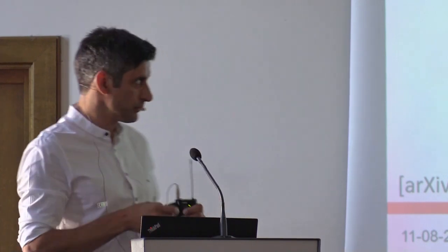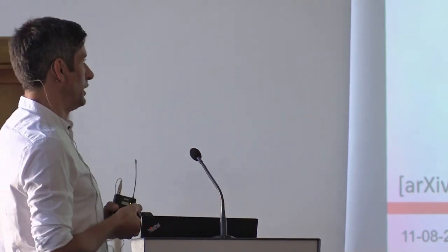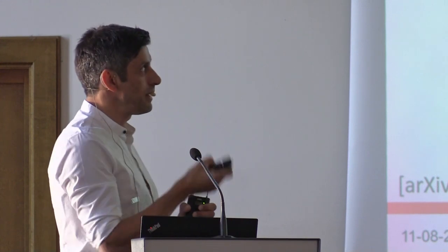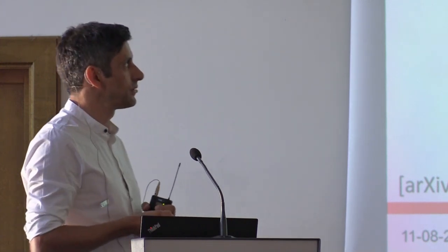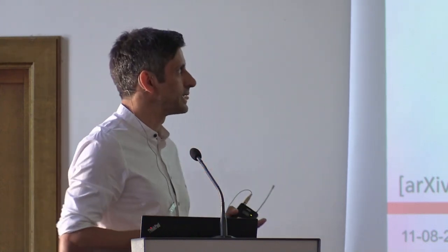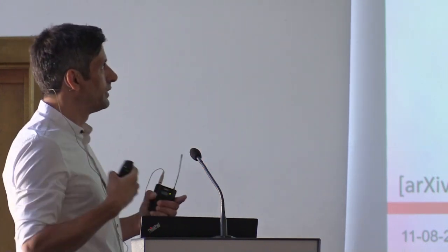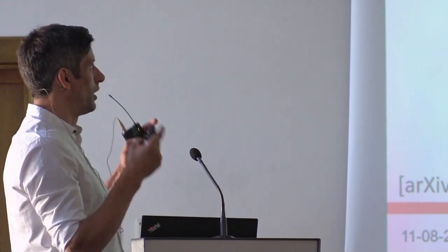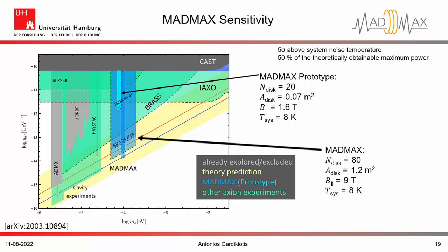To give the big picture: using the MadMax prototype with 20 dielectric discs of 300 mm in diameter inside the Morpugo magnet at 1.6 Tesla, we have the ability to even surpass the IAXO limits. And of course, the final MadMax experiment composed of 80 discs with large surface at nine Tesla and the same system temperature can reach the QCD axion band we are aiming for.